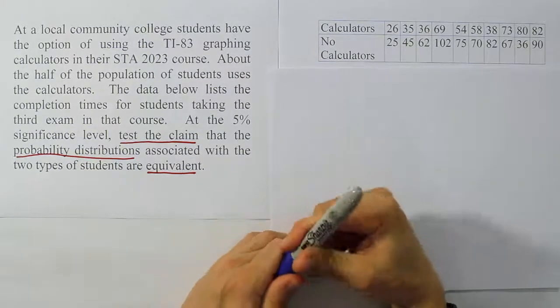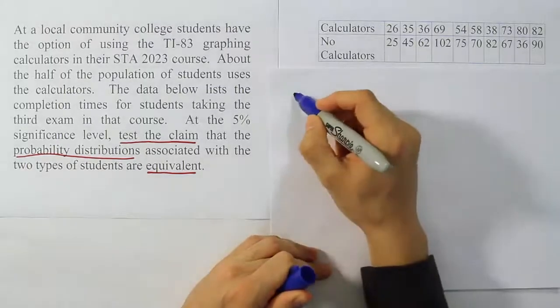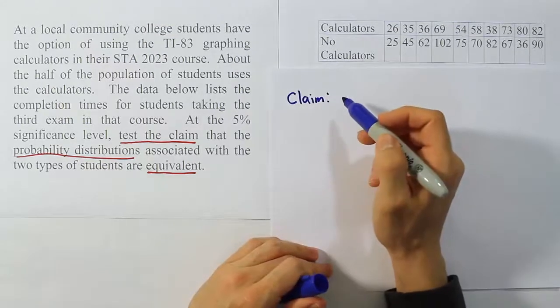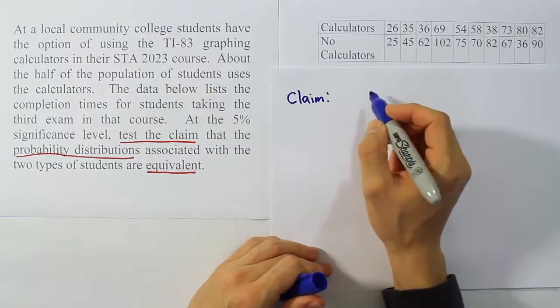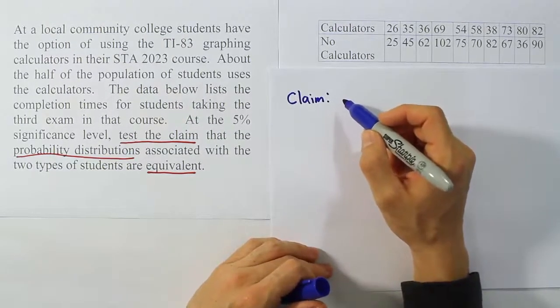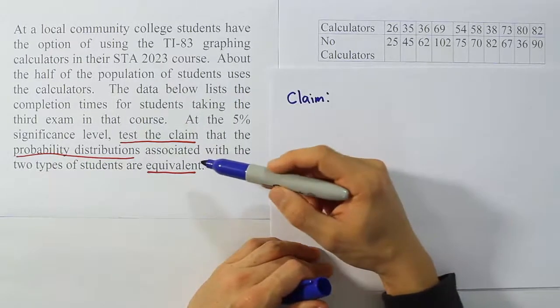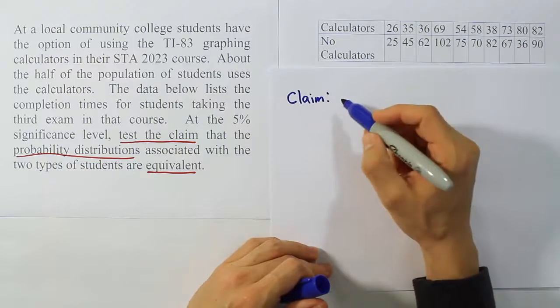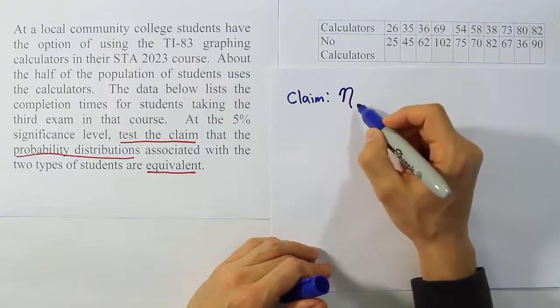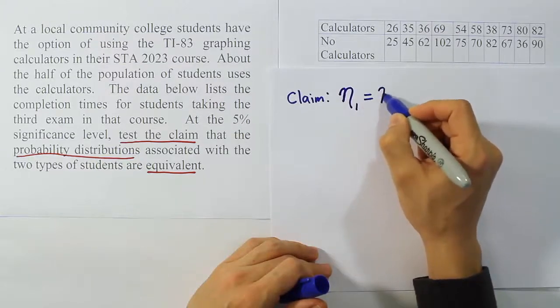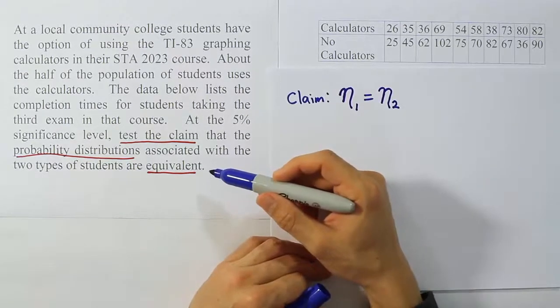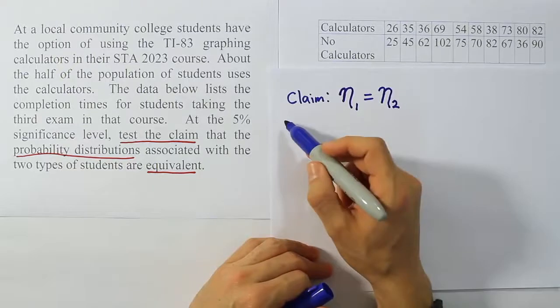Okay, so let's start with the claim then for our procedure. So the claim for the Wilcoxon rank sum test, a lot of times they'll just write the statement out that the probability distribution for the first population is equal to the distribution for the second population. What I want to do instead is talk about the median of the populations because, of course, if the probability distributions are equivalent, so would their medians be equivalent. So I'm going to say that the median for population one is equal to the median for population two. This expresses the idea that the two populations are equivalent or their probability distributions are equivalent.